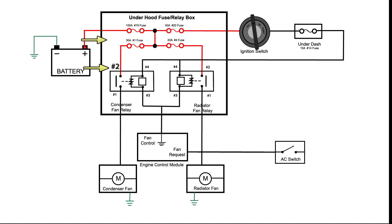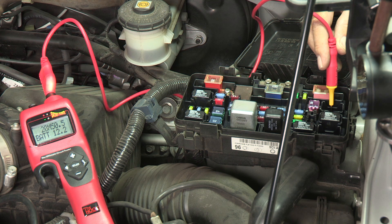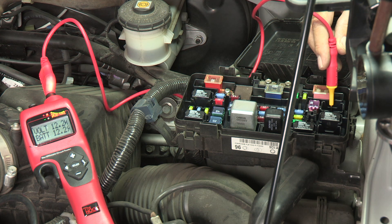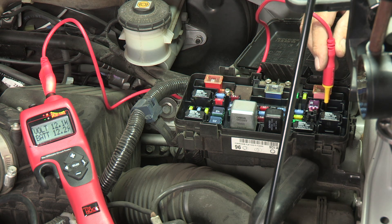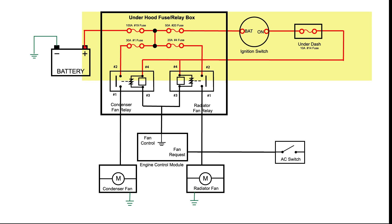Terminal 2 should have battery power supplied by the 30 amp fuse, and Terminal 4 should also have battery power when the key is on. This is supplied by the 10 amp fuse. Let's test them next. We have battery power at Terminal 2, and with the key on, we also have battery power at Terminal 4. This confirms the fuse and the wiring are good up to this point.